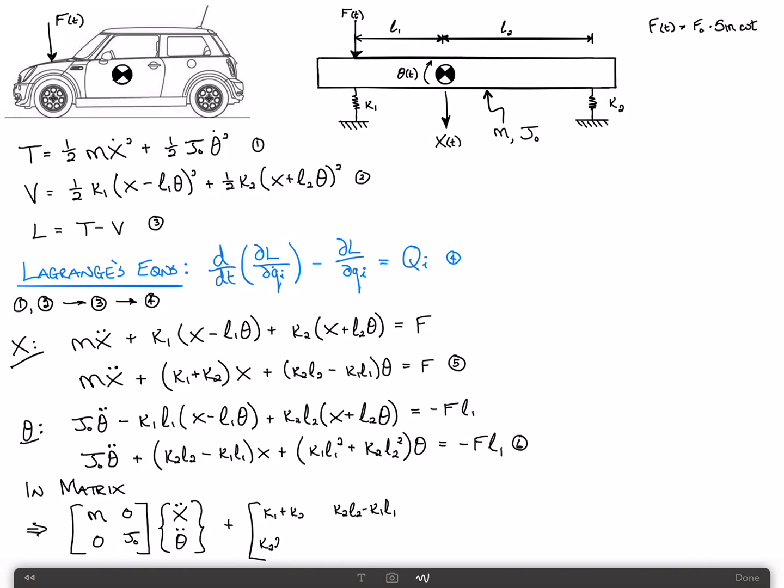Same thing here, K2 L2 minus K1 L1. Of course, this should always be symmetric. If it isn't, you've done something wrong. And then there's K1 L1 squared plus K2 L2 squared, and that's times X and theta. And that equals F, minus F L1.